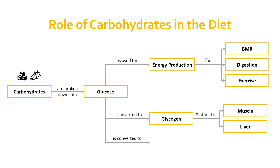Any excess glucose beyond what's needed for basal metabolism, digestion, and exercise will be converted to glycogen and stored in the muscle or the liver, topping up those stores if they've run low. But if we've still got more glucose to deal with, we can also convert it to triglycerides. A triglyceride is in fact a fat — a glycerol backbone with three fatty acids attached to it — and those triglycerides are stored in our fat stores.